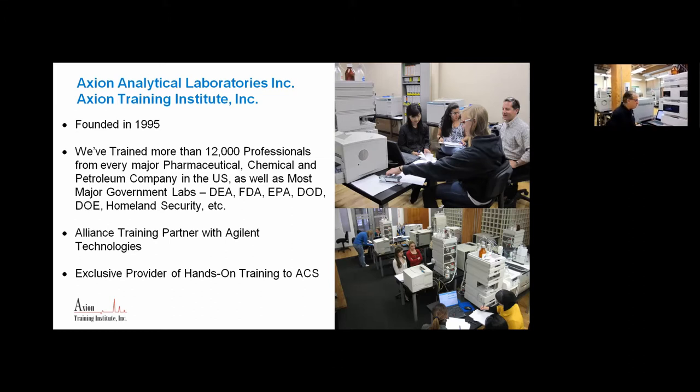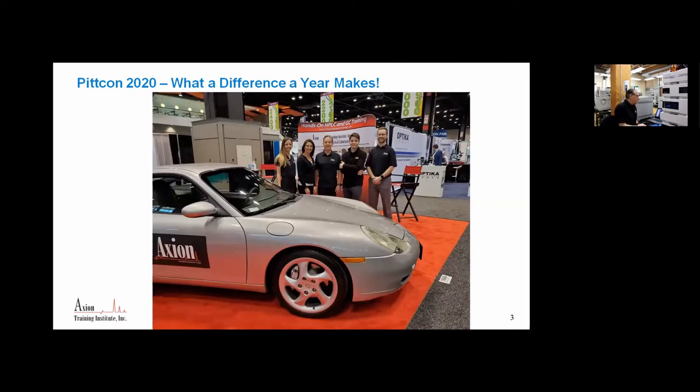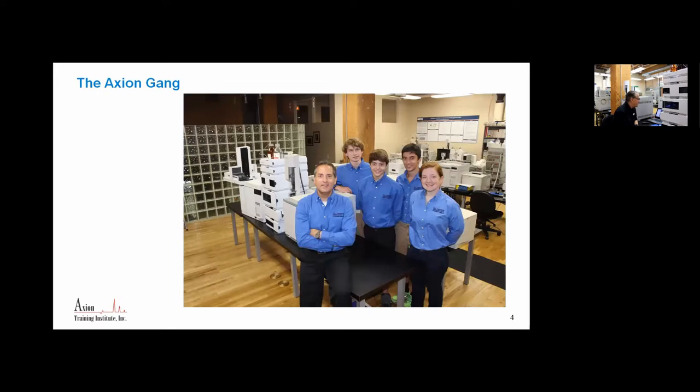GC is the same thing. There's a bunch of buttons and knobs and dials on the instrument, but each one does something. One makes the analysis faster, one makes the separation better, one improves sensitivity. Once you know what they do, it's just a matter of flipping the right switch. We've taught this for many years to thousands of people. We are an alliance training partner with Agilent Technologies, and we're also the exclusive provider of hands-on training to the American Chemical Society.